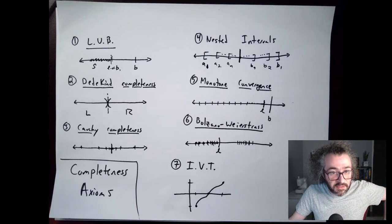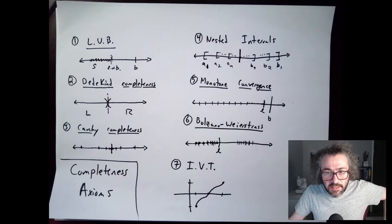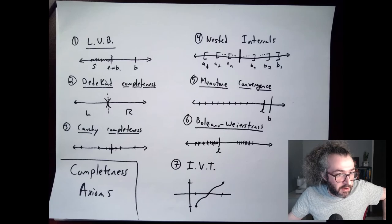The main thing to know about these axioms if you're studying real analysis for the first time is that they're all equivalent. Once you get comfortable with them, you can pick whichever one is right for the job depending on what proof you're working on. That might be all I want to say about the completeness axioms for now. But while you're still here — if you are looking for a real analysis tutor, I tutor online and my contact info is in the description. Get in touch if you're looking for any kind of online math tutoring. Take care, bye.